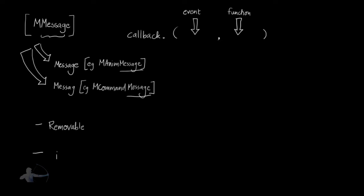Whenever we create a callback, an ID of that callback is returned. This ID is used to keep track of the callback and to remove it. Once we lose this ID, it would not be possible to delete the callback and it would stay in your Maya session forever. So it is important to manage the callback IDs.